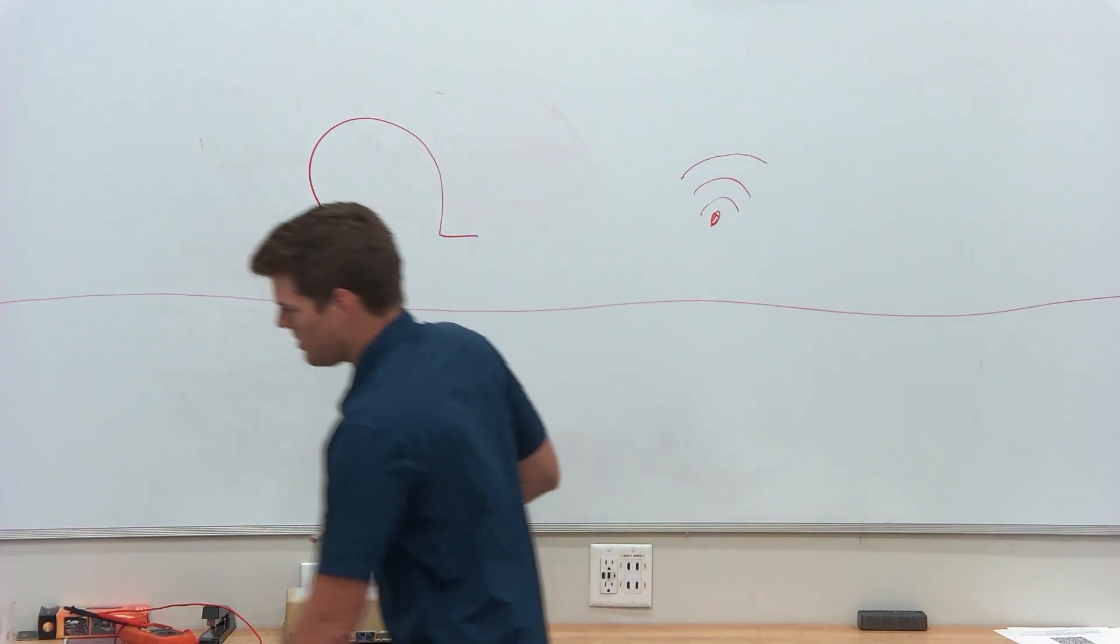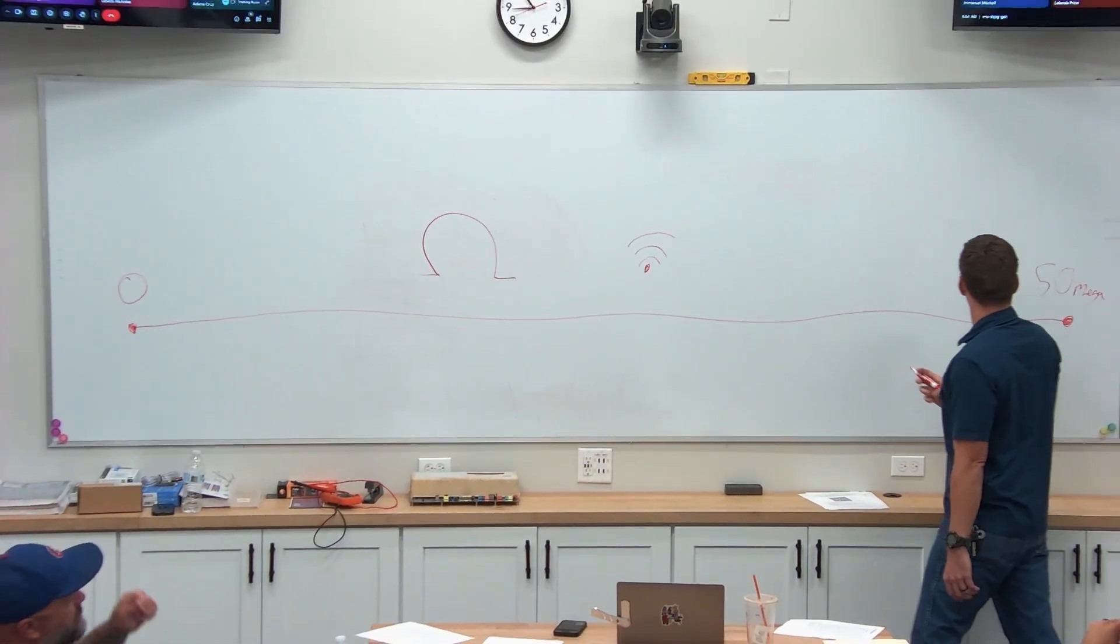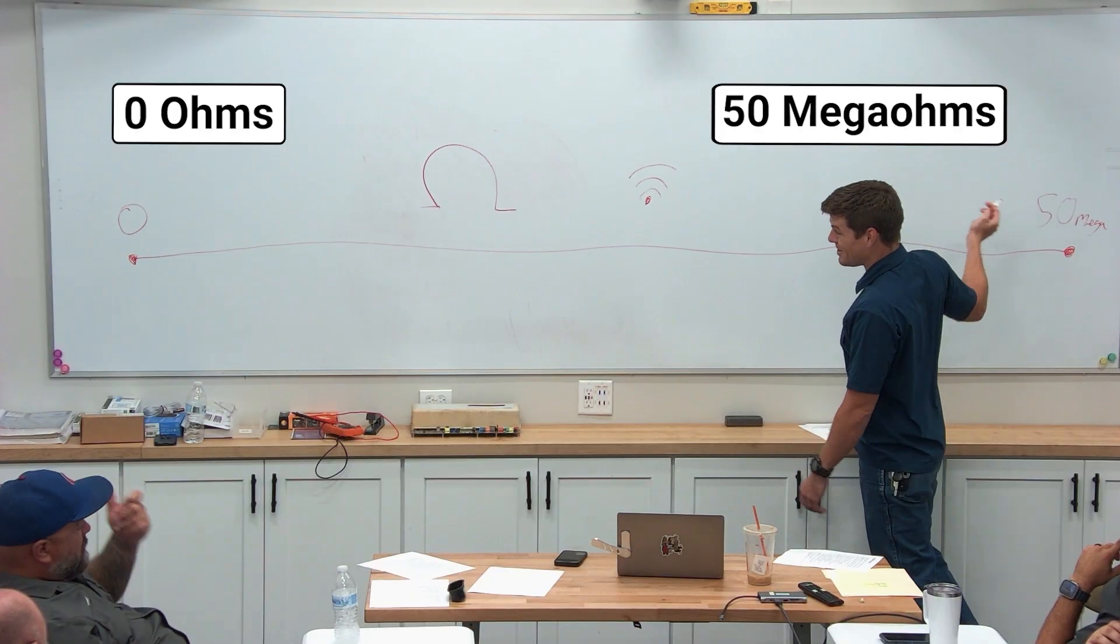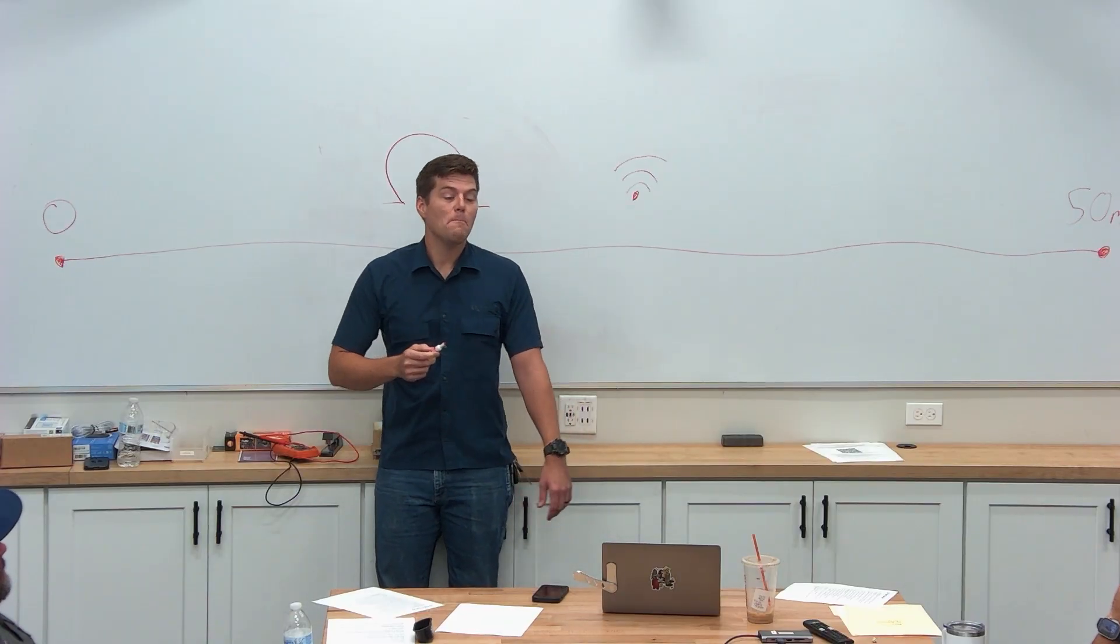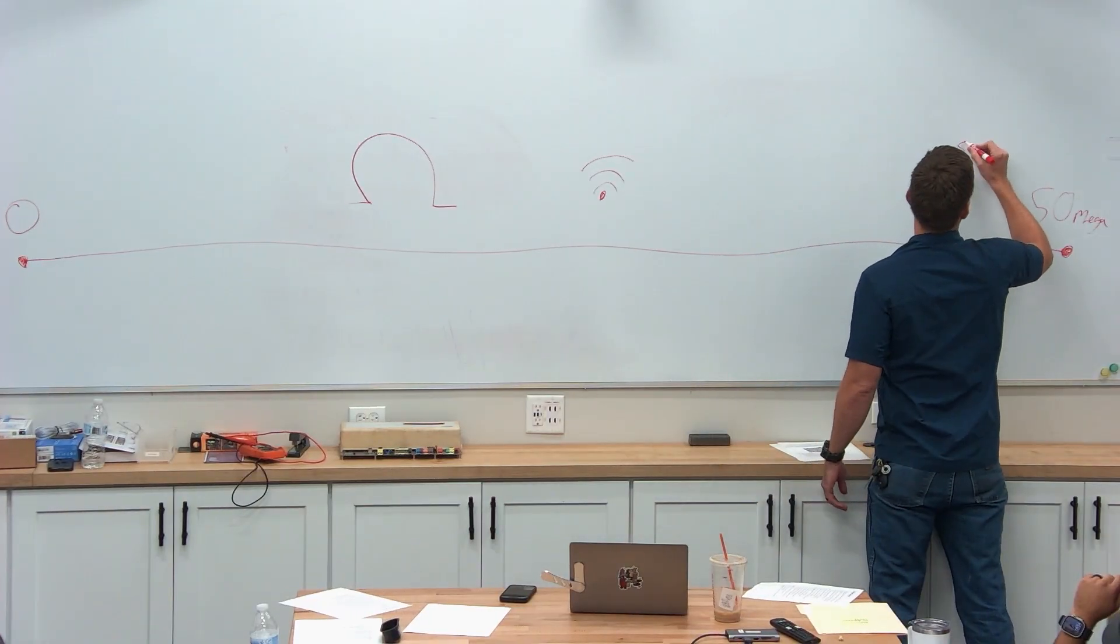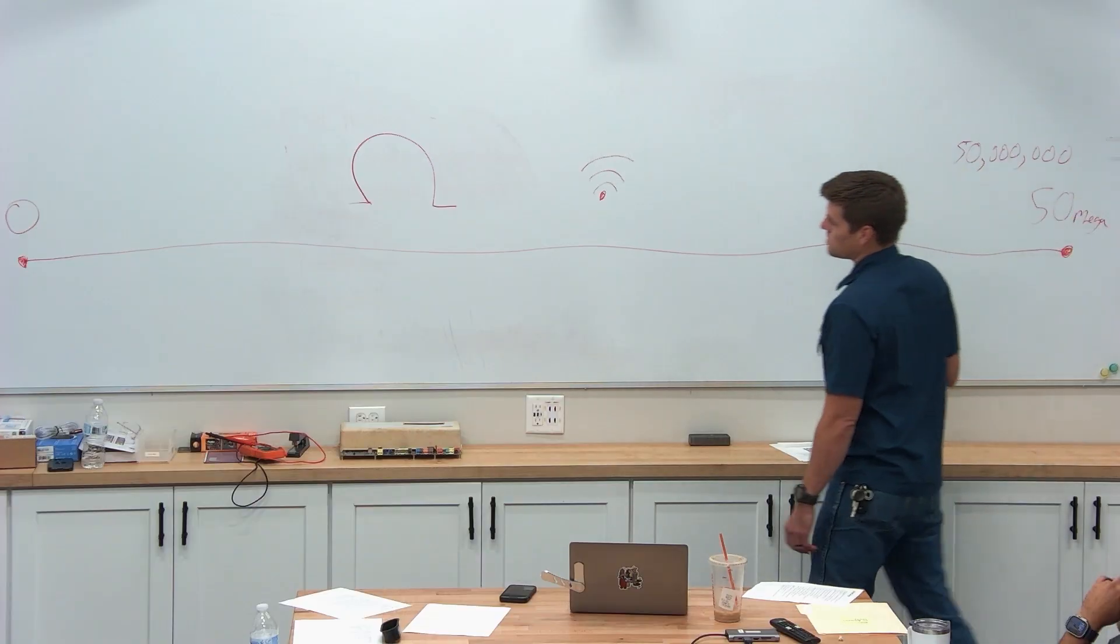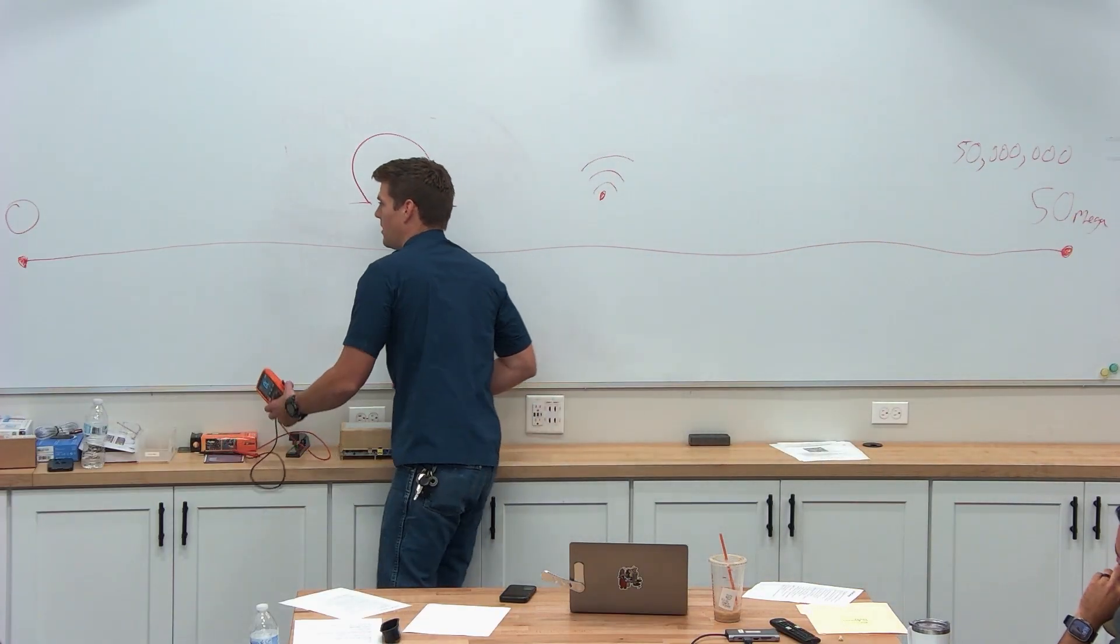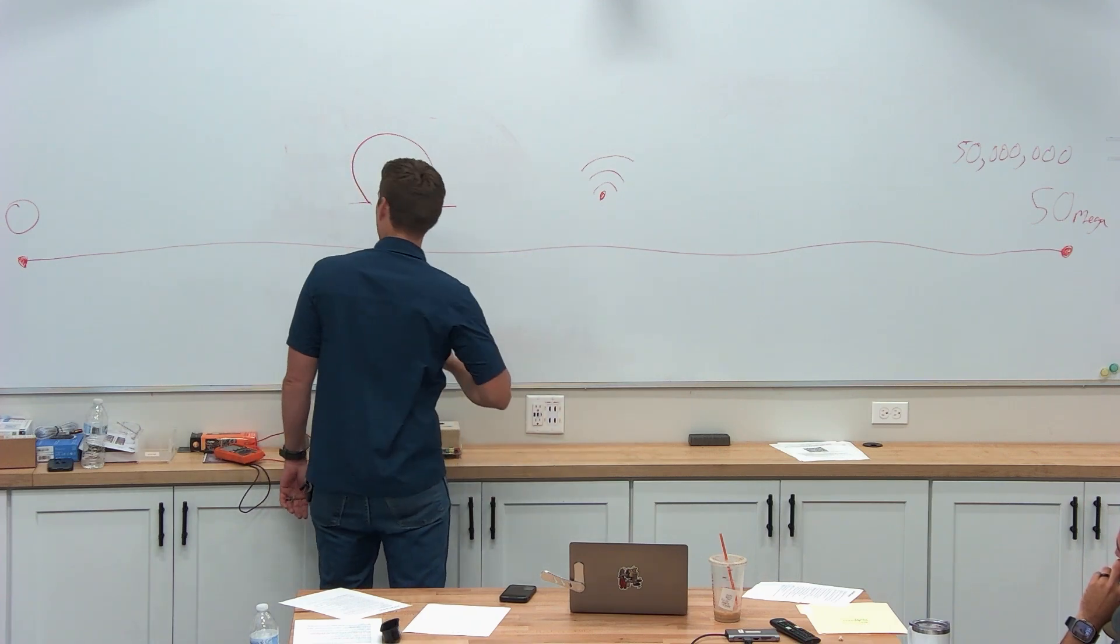So let's plot continuity on the scale here. This is zero ohms, and this is 50 megaohms. Does anybody know how many ohms is 50 megaohms? 50 million ohms. This is our resistance scale if you have a meter like mine.